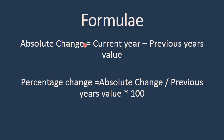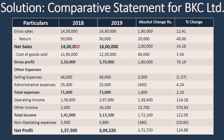So whatever changes occurred, this change upon the previous year's value multiplied by 100 gives us the percentage change. Applying these formulas — the particulars are the same as given in the question, and the figures for 2018 and 2019 remain the same. The absolute change: for gross sales, the current year's value is 16,30,000 minus 14,50,000, which comes to 1,80,000 rupees.